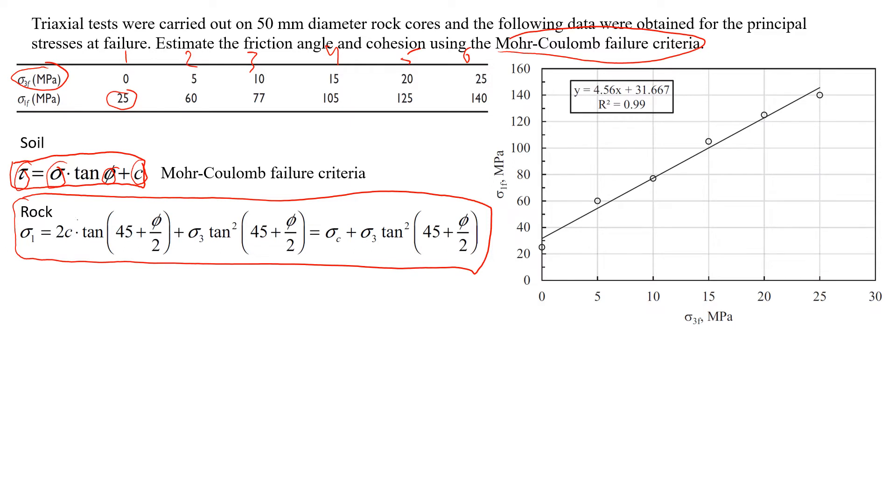So you will see we have cohesion here and we have friction angle here. For rocks we typically use stresses, we use principal stresses sigma 1 and sigma 3. We don't really care much about shear strength of rocks because if rock is fresh and hard shear strength is going to be very very high.